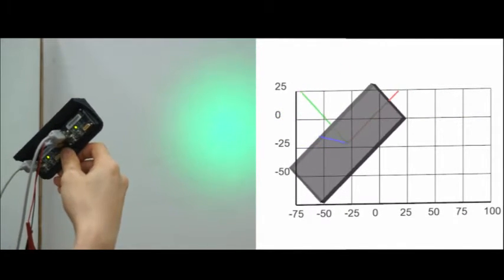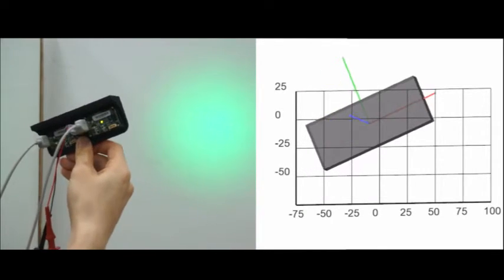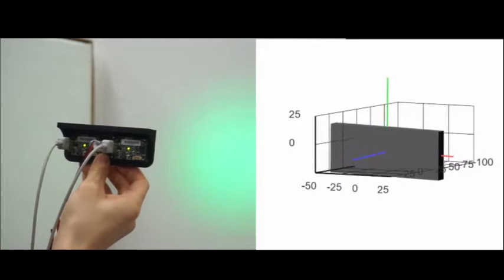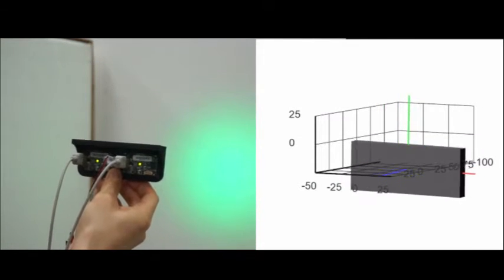Speedo can precisely measure small motions in 6 degrees of freedom, even from textureless flat surfaces. Other camera-based methods, such as SLAM, do not have this functionality.